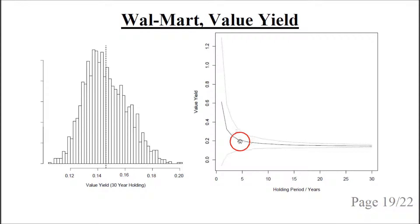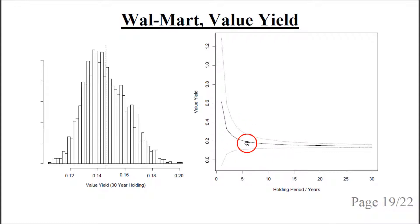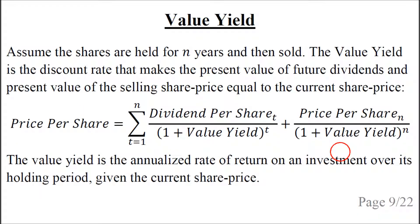The plot on the right shows the mean and standard deviation of the value yield for different holding periods — the lines show one standard deviation. There is greater uncertainty about the annualized rate of return when the holding period is short. The reason is that the longer the holding period, the more the value yield depends on dividends. As N increases, the dividend component of the formula becomes more important and the terminal price component becomes less important. When N is small, the price per share term dominates, and because the price per share is very volatile in this pricing model, the value yield distribution has a large spread.